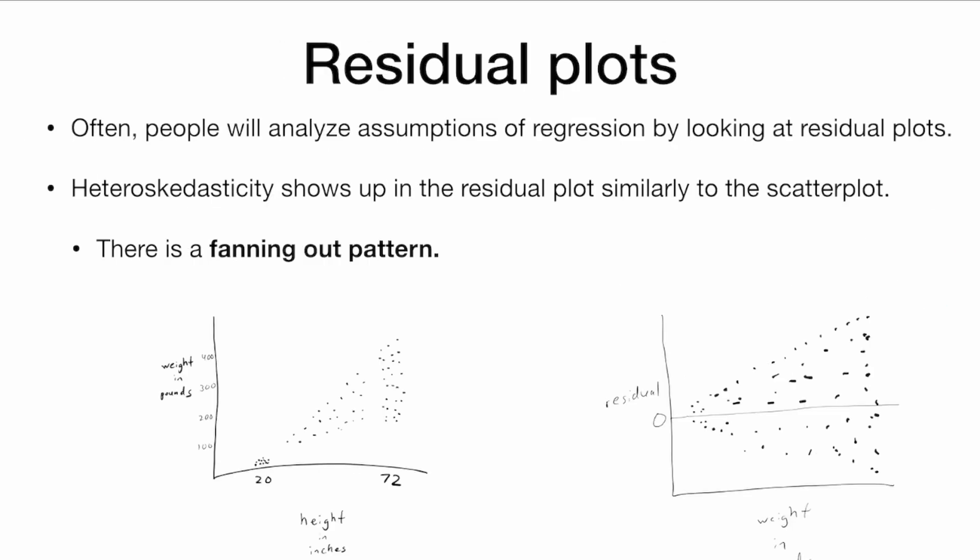So often people will analyze assumptions of regression by looking at residual plots. And we can see that this unequal variance shows up in the residual plot in the same way that it shows up in the original plot.